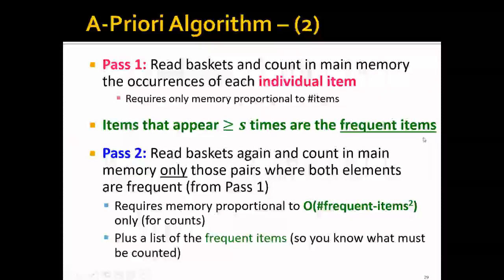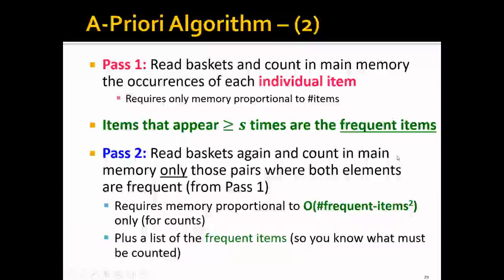And in the second pass, we will read the baskets again and count in memory only those pairs where both elements are frequent. So basically, if you have, let's say, for example, N frequent items, you only need N squared memory. And this is proportional to the square of the number of frequent items as opposed to the square of the number of total items. And this is in addition to the cost of maintaining a list of frequent items so that it will know what must be counted.